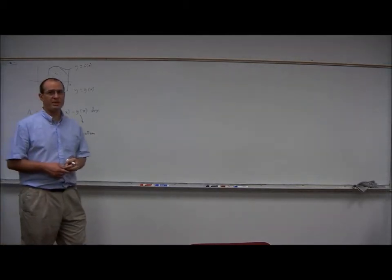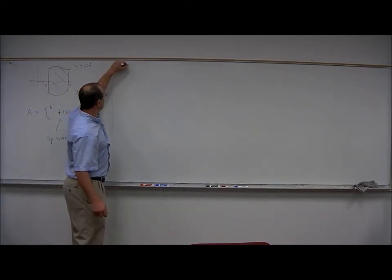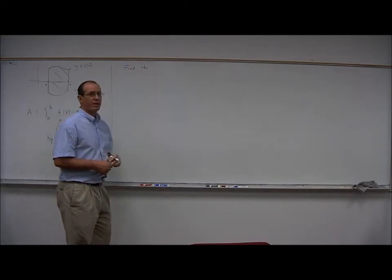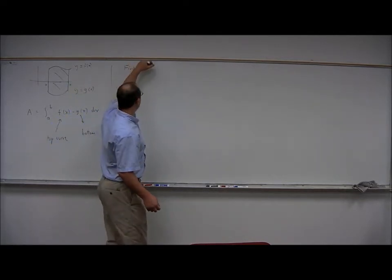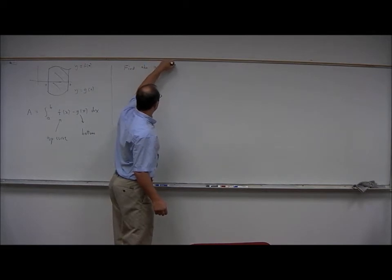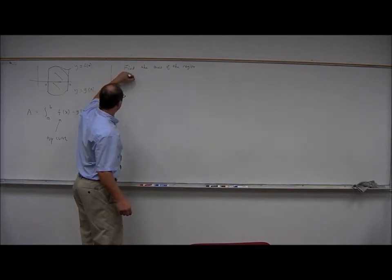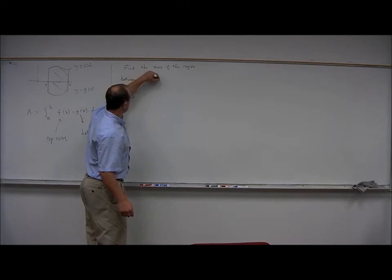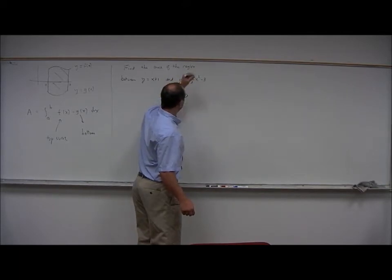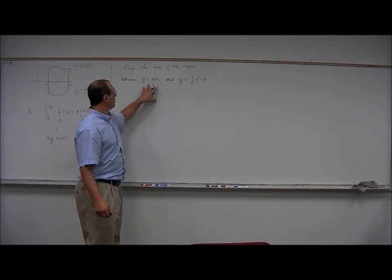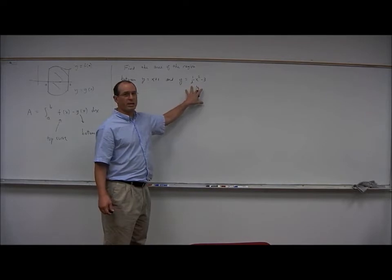So I would like to present a specific example of this. Let's find the area of the region between y equals x plus 1 and y equals 1 half x squared minus 3. y equals x plus 1 is a straight line, and y equals 1 half x squared minus 3 is a parabola.